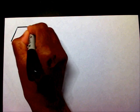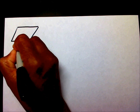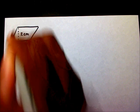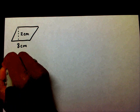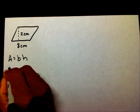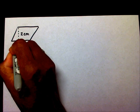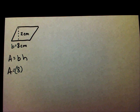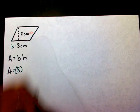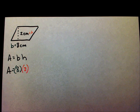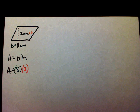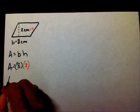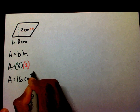Let's work another one. We want to write our formula: A equals B times H. We say A equals our B, which is 8. And our H is 2. So the only thing we need to do is multiply 8 times 2. Well, 8 times 2 is 16 centimeters squared.